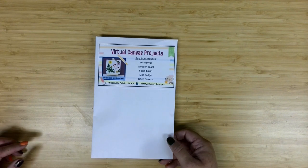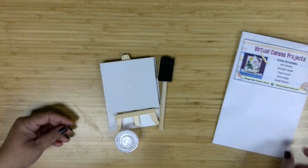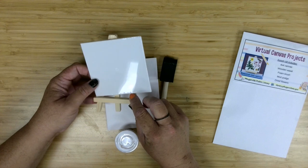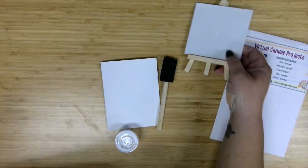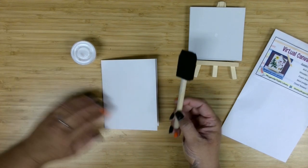In our small white envelopes this month you have all the things that you'll need. We've got our mini 4x4 canvases that come complete with a little easel that you can display your work on later. We've got a little bit of Mod Podge as well as a foam brush.